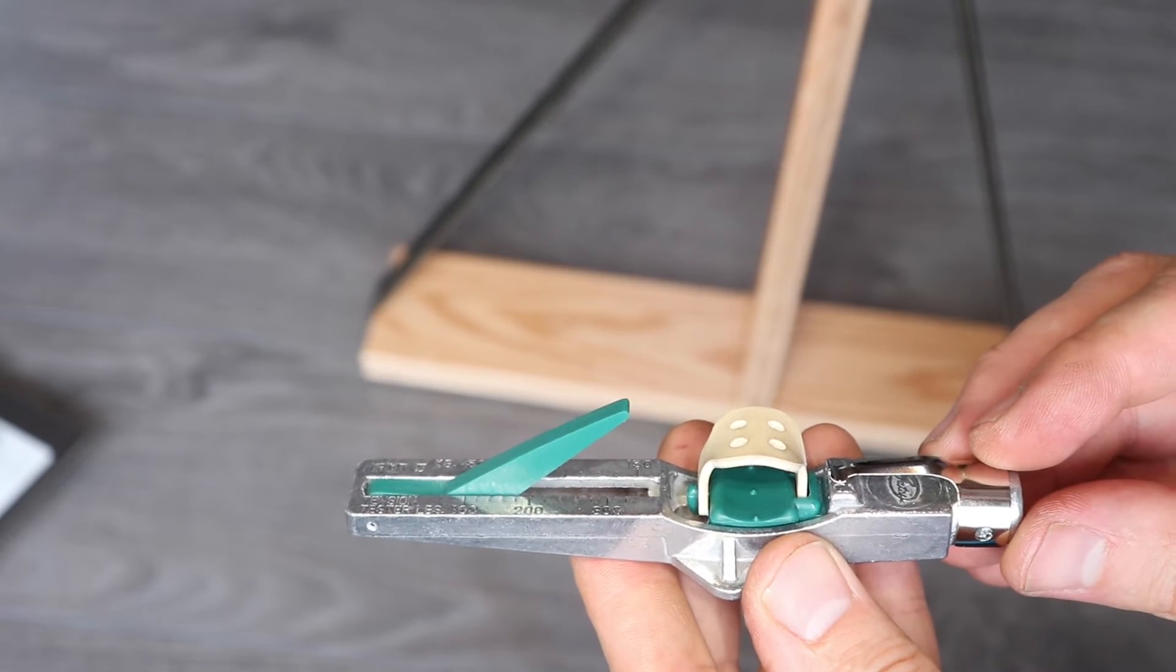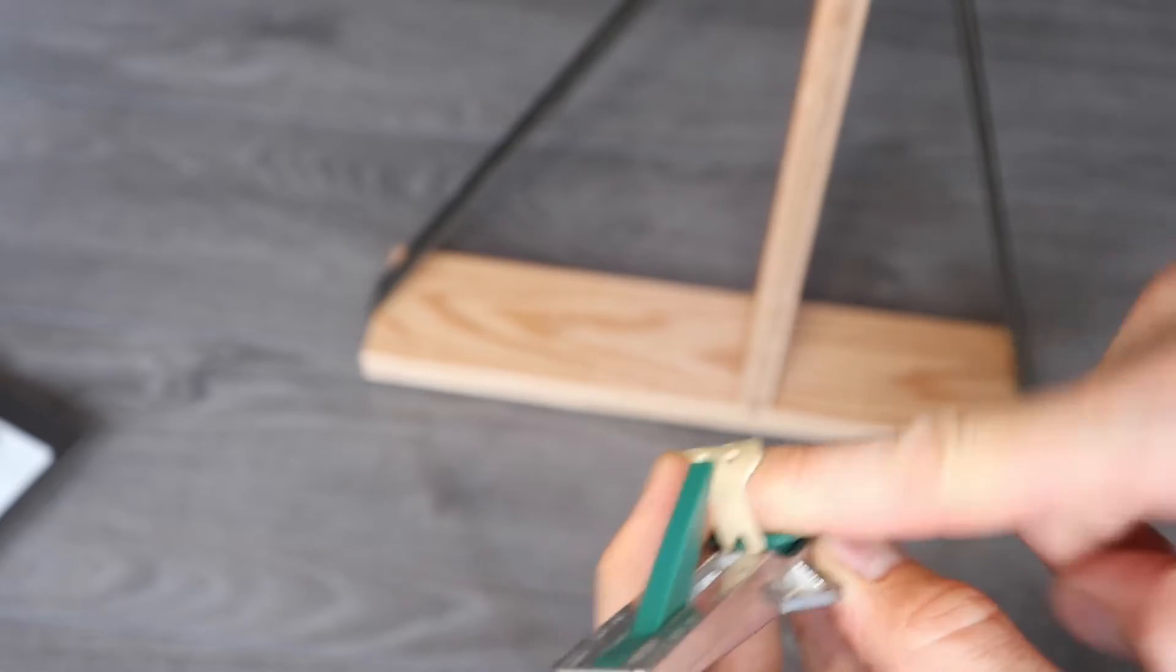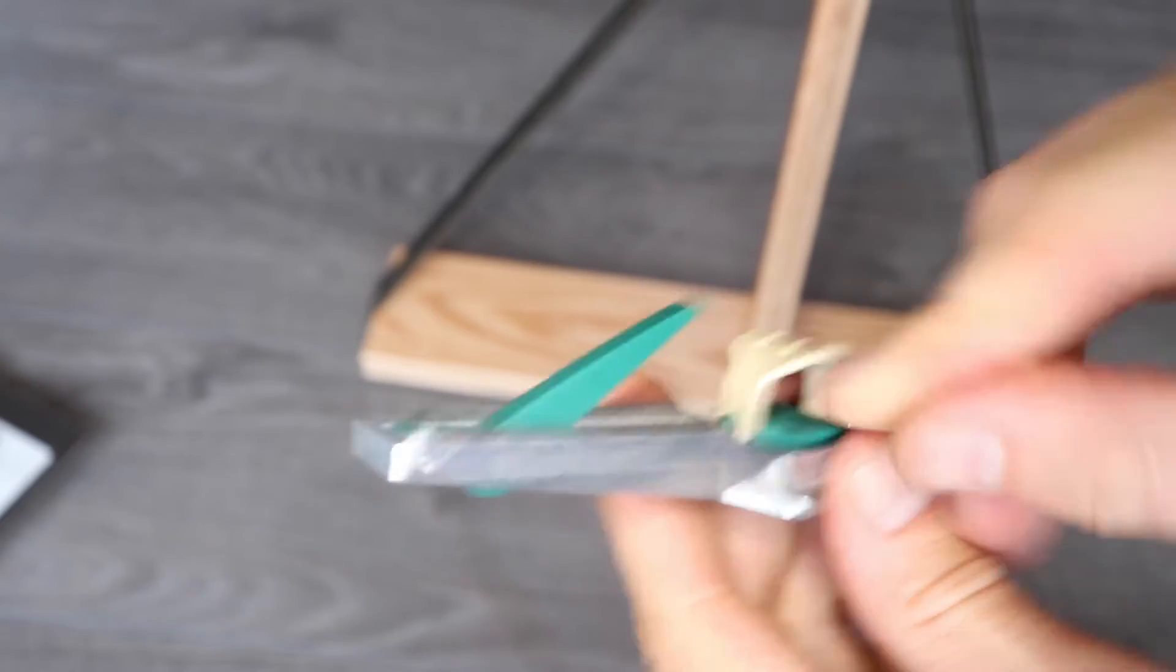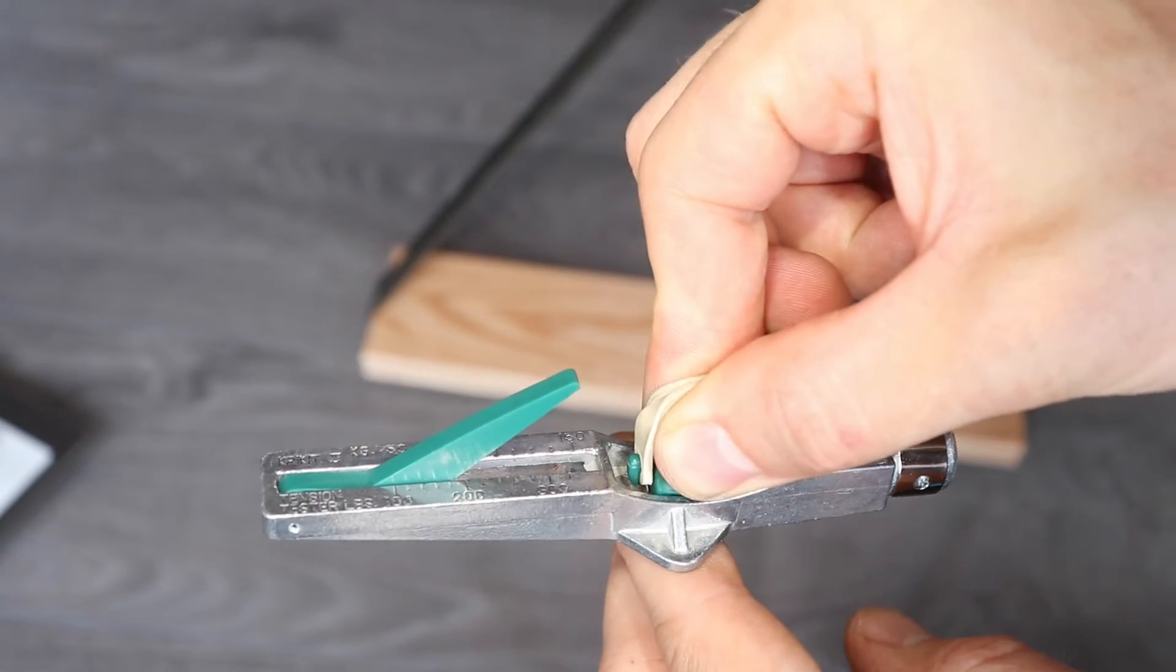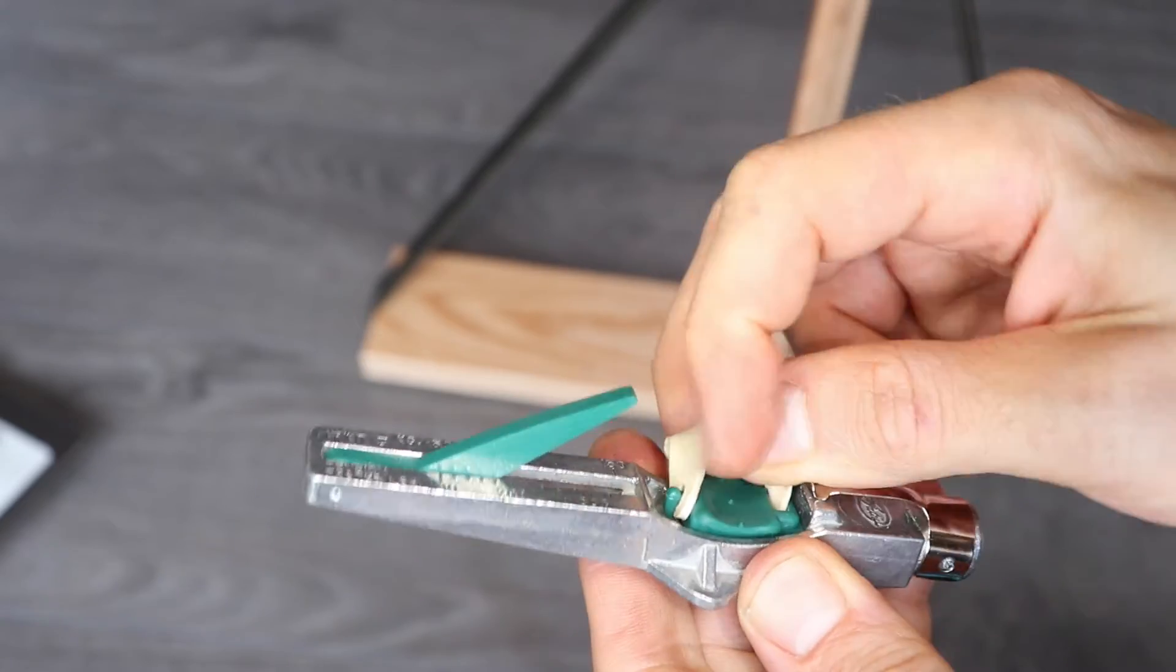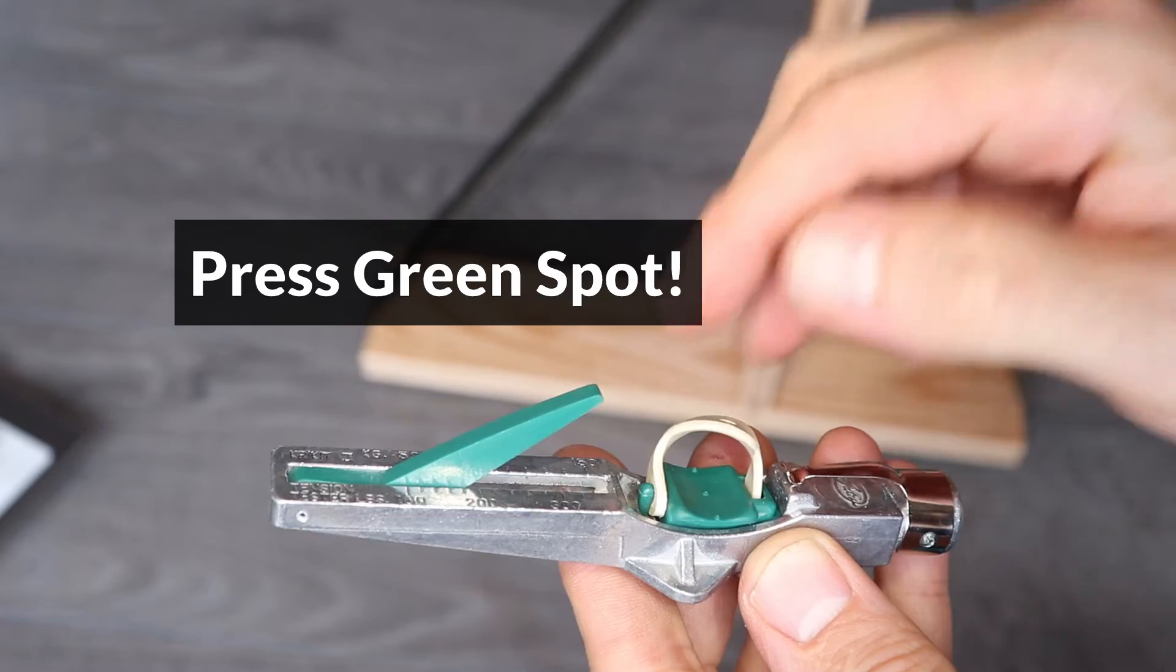Alright, so now I'm going to show you how to use the Krickit. There are two ways to hold it. You can put your index finger through the loop here and press down against the belt, or you can use your thumb and index finger and hold the loop, and now you can press with both fingers, which gives you a lot more power. As long as you're pressing on this spot right here, it's okay, just make sure not to press anywhere else.